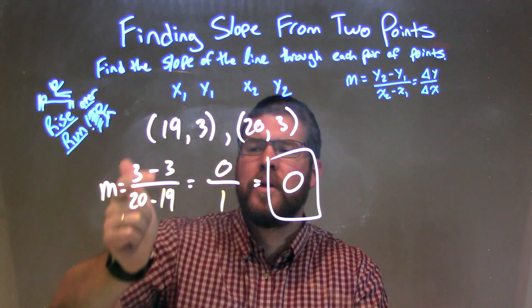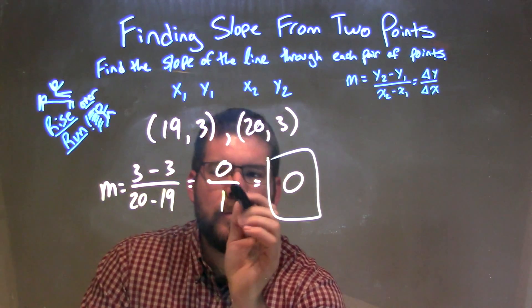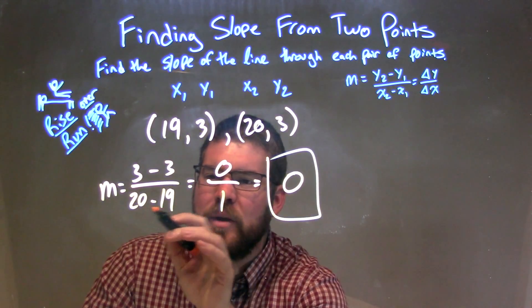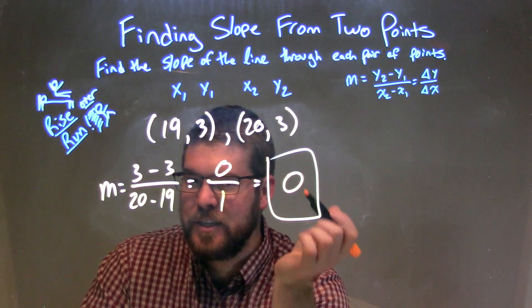So we have 3 minus 3 over 20 minus—not minus 9—minus 19. We simplified that: 3 minus 3 is 0, and 20 minus 19 is just 1. 0 divided by 1 is just 0.